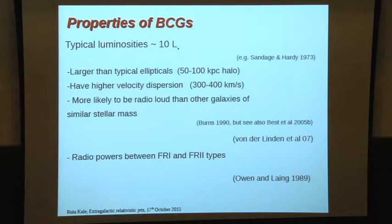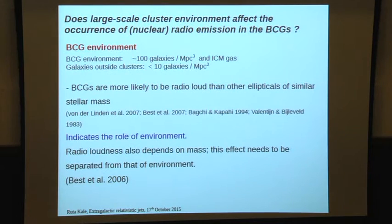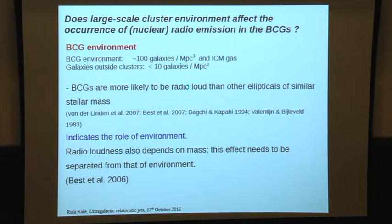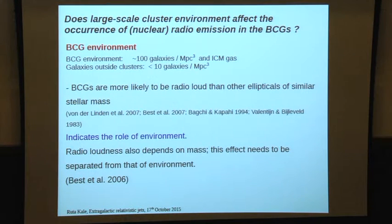Their radio powers are typically between the powers of FR-1 and FR-2 type radio galaxies. We asked whether the large-scale cluster environment affects the occurrence of nuclear radio emission in these BCGs, because the environment they see is extremely different from what galaxies outside clusters see — for example, the densities of galaxies and the ICM around them. The fact that BCGs tend to be more radio loud than other galaxies of similar stellar mass outside clusters indicates that their special position at the cluster center plays a role.